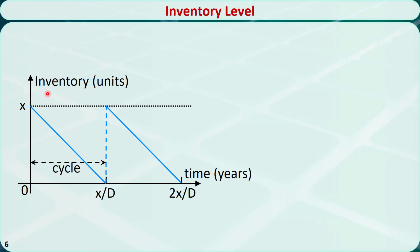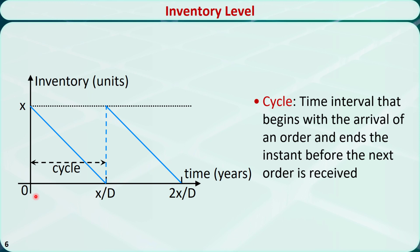Before we calculate the total cost, let's see how the inventory level changes over time. Assume we place an order of size x at time 0. Because the lead time is 0, the order arrives immediately and the inventory level is x. Since total demand D is consumed in one year, it takes x/D years for inventory to reach 0. The inventory level declines along a straight line of slope −D. When it reaches 0, an order of size x is placed again and arrives instantaneously. This is called a cycle — it begins with the arrival of an order and ends immediately before the next order. The cycle length is x/D.